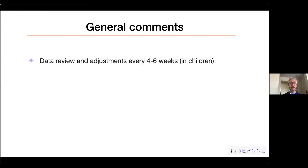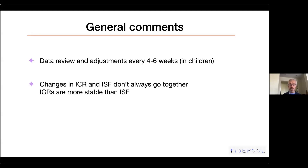Just a few general comments — my opinion, particularly in children: data review and adjustment should be done frequently, like every four to six weeks in children, maybe much less than that in adults because they don't change that much. It should not last more than six weeks at a time, then data should be reviewed and settings adjusted for both the basal rates as well as the ISF. Primarily the ISF, because the insulin-to-carb ratio does not change as frequently as the ISF. It's the ISF that changes dramatically — that's very different between adults and children.